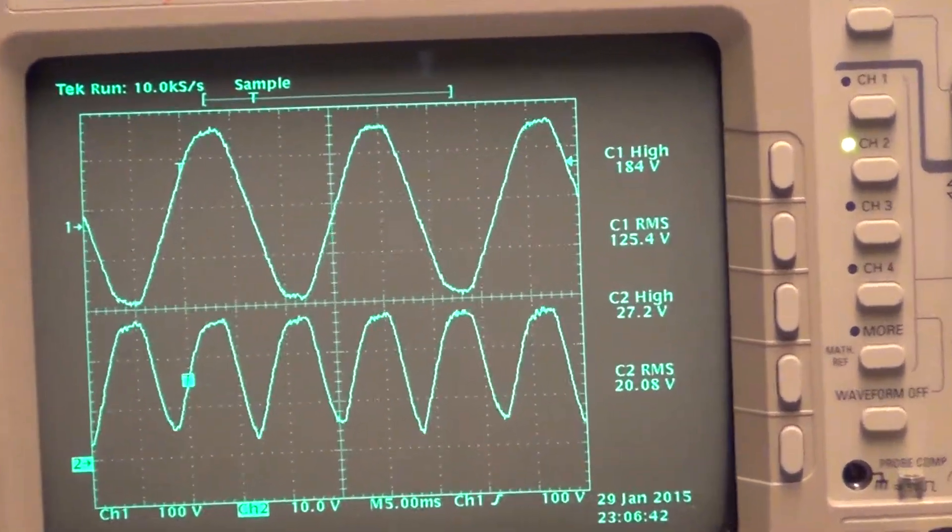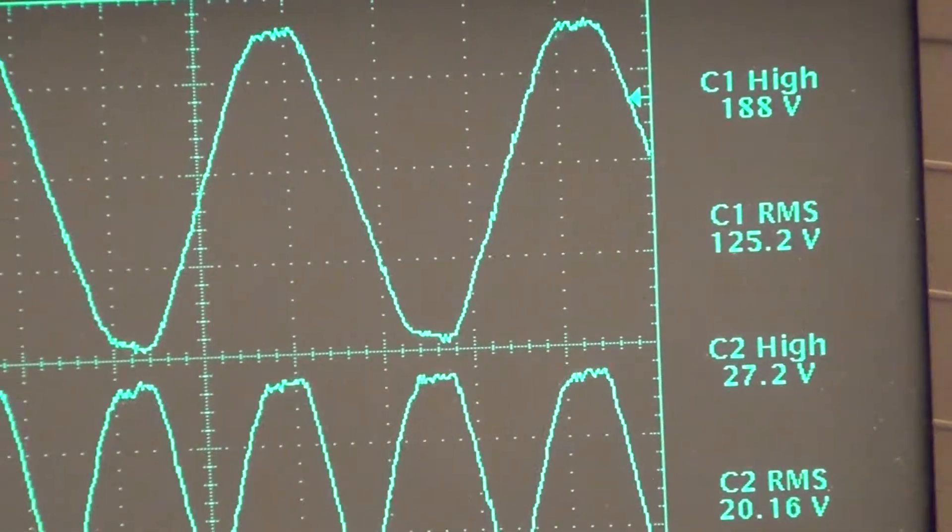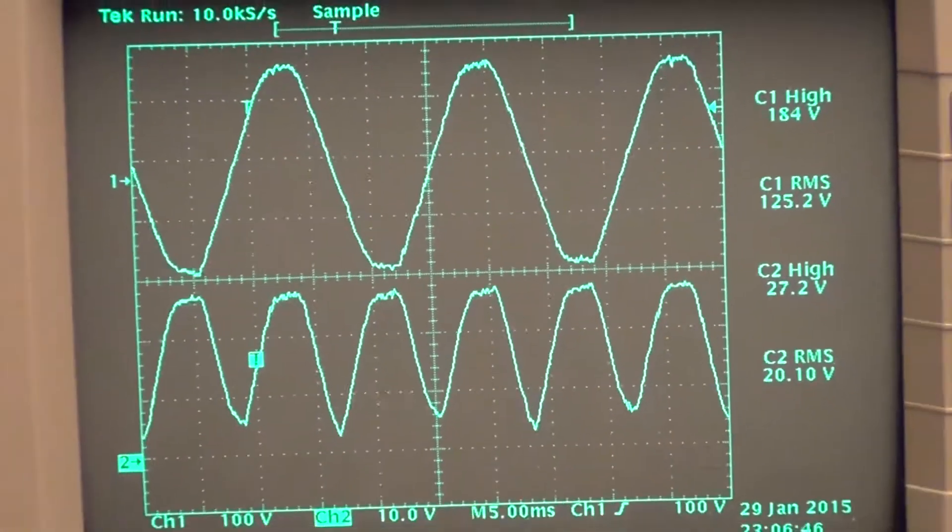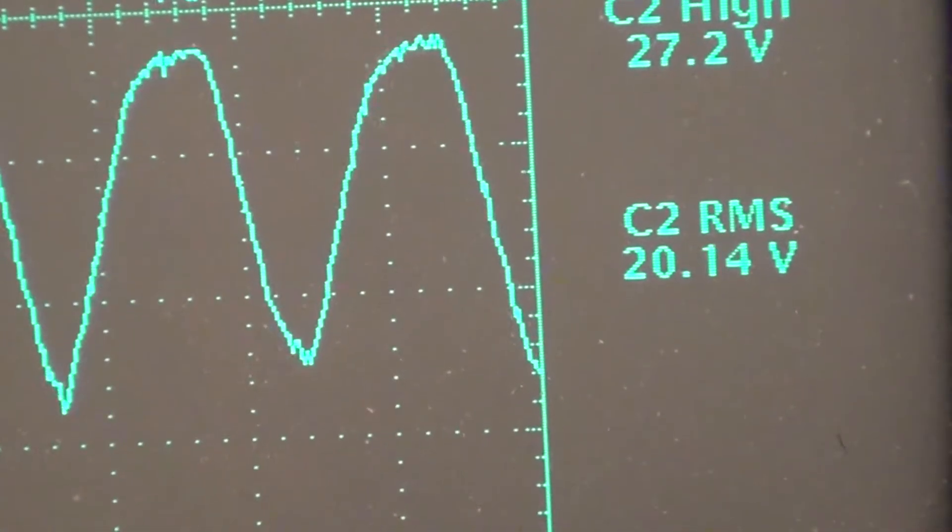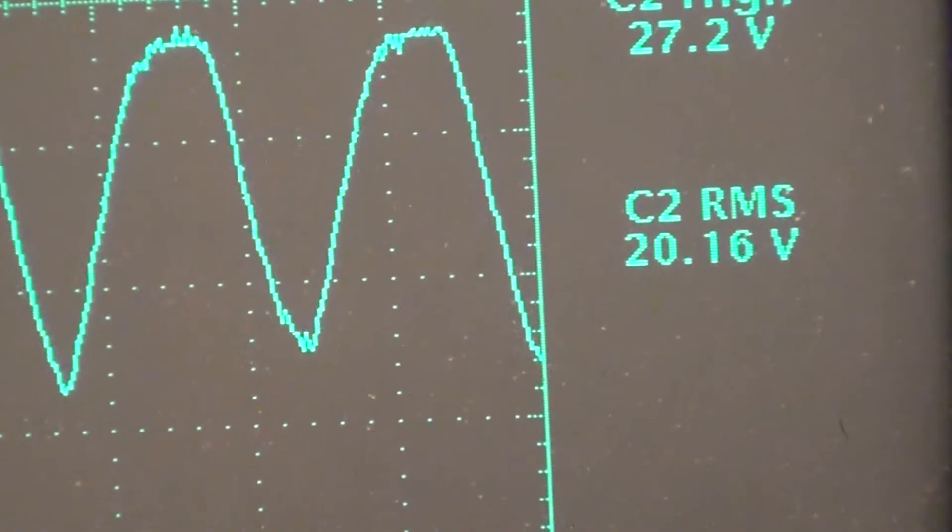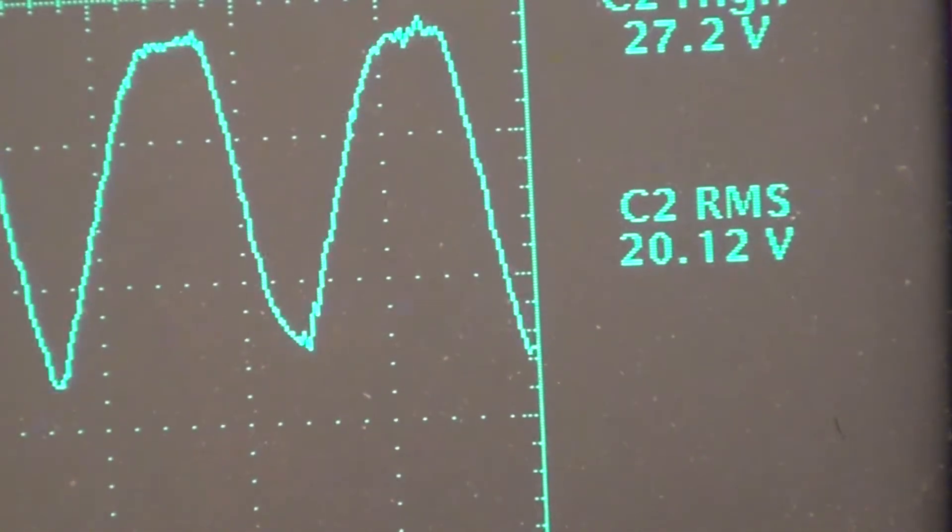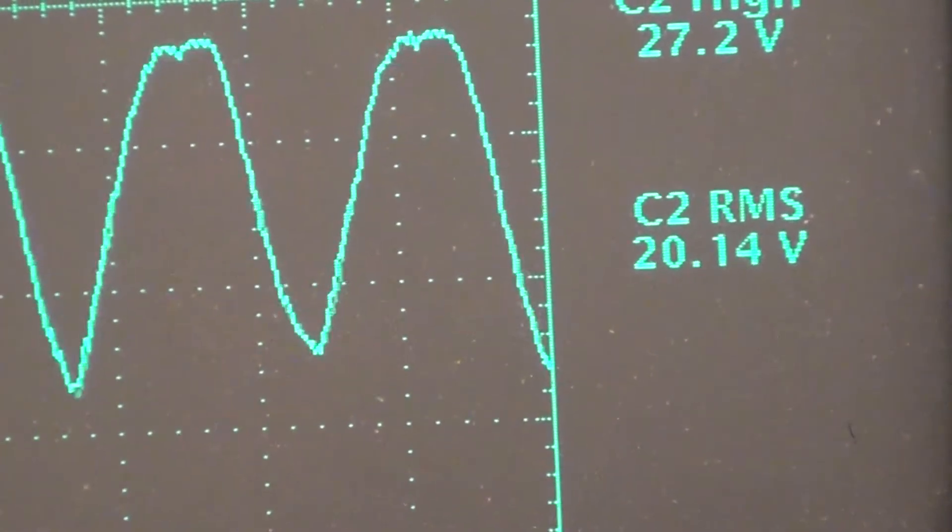On the screen there, I have a rectified wave. Again, the top is the primary at 125. And the bottom there is the DC, which is the DC equivalent.